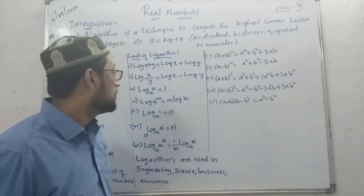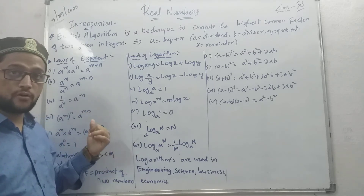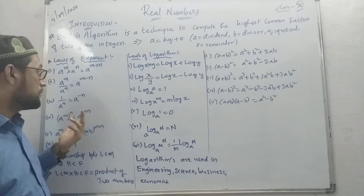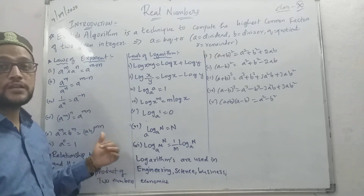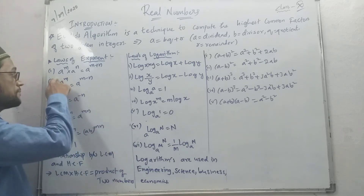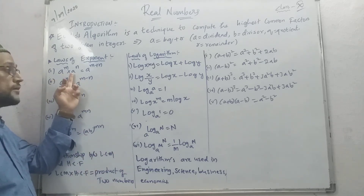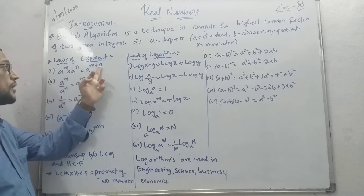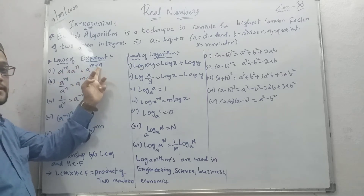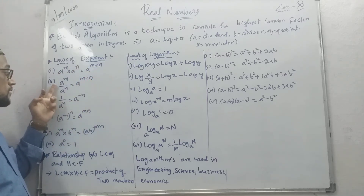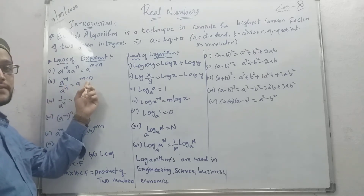Next, Law of Exponents — we have already read this in previous classes. Here we have these formulas. First formula: A power M into A power N — base is same, so powers add: A power M plus N. Second formula: division with same base — power becomes M minus N.